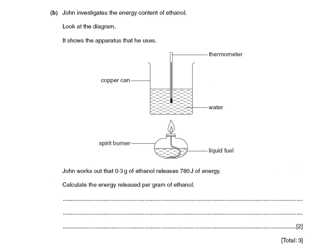Finally, a past paper question on this topic. John investigates the energy content of ethanol using a calorimeter. John works out that 0.3 grams of ethanol release 780 joules of energy. Calculate the energy released per gram of ethanol. The energy per gram equals the energy released — 780 joules — divided by the mass — 0.3 grams — which equals 2,600 joules per gram.